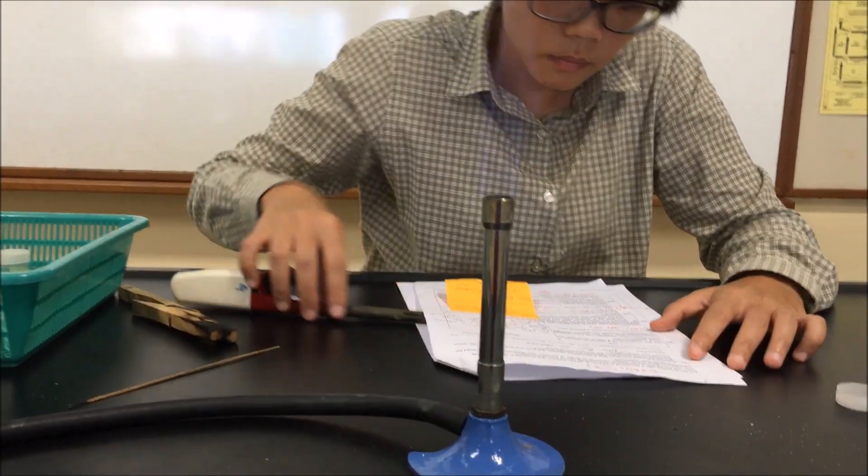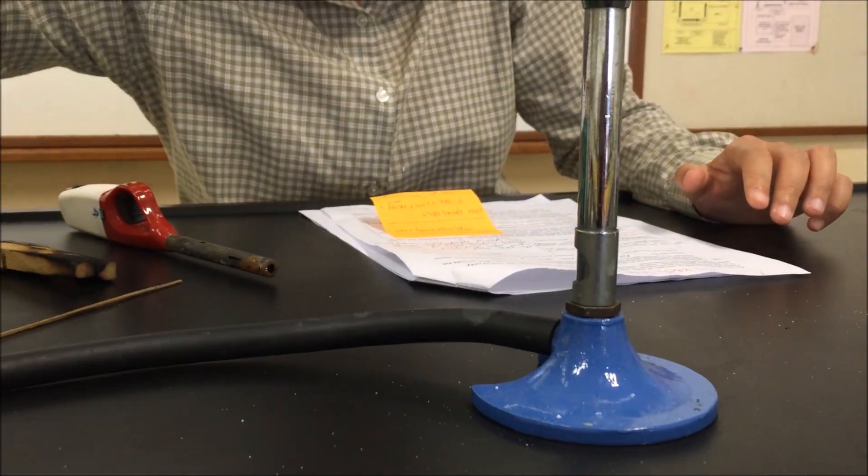So when not using the Bunsen burner, close airhole, change to a luminous flame. It's a safety flame.